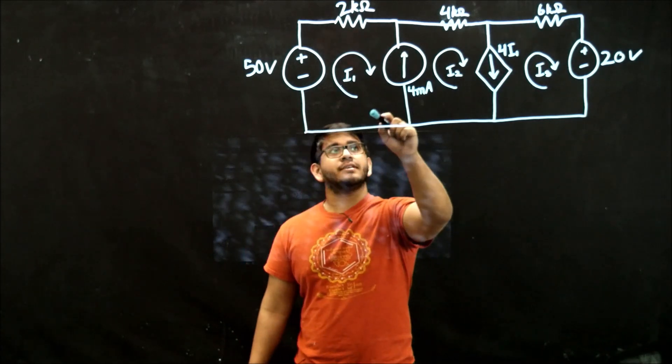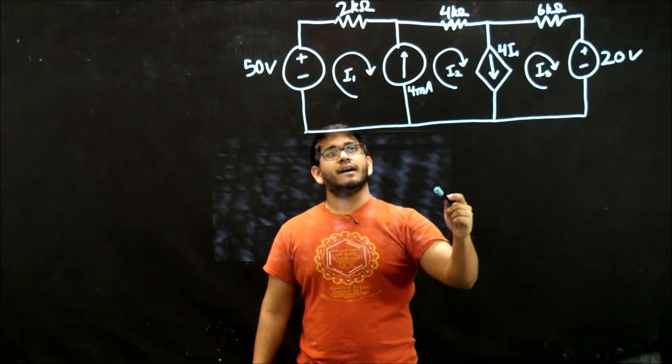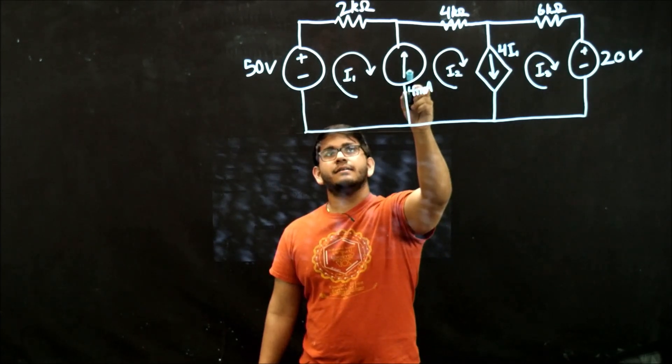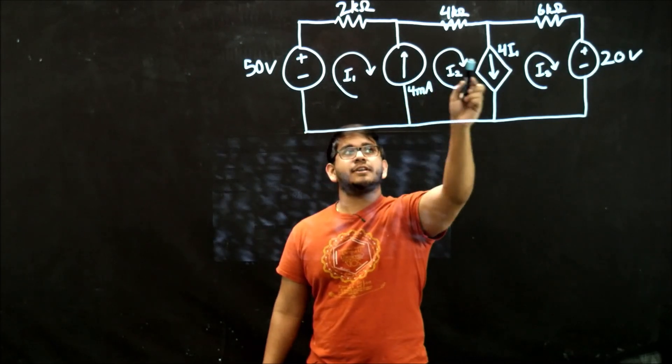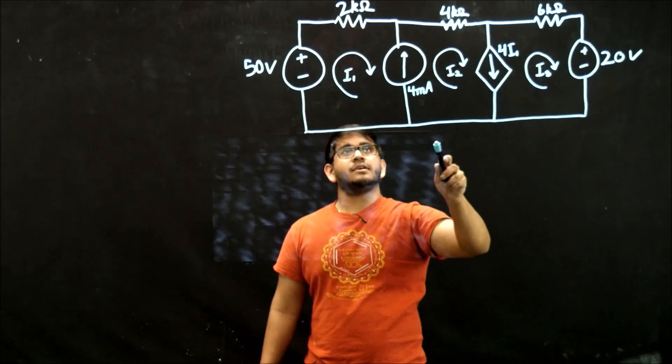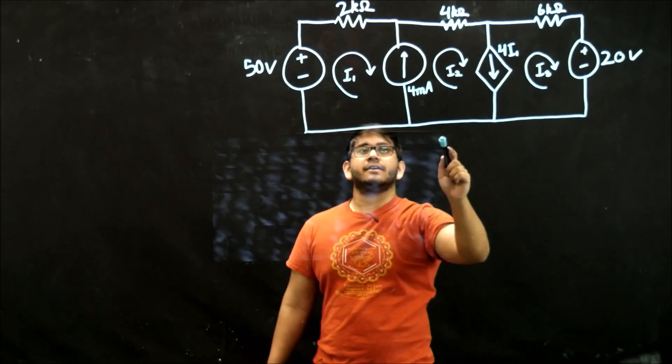In each of the currents in each of these meshes, we're going to have to use KVL. And since we have an independent current source between these two meshes and a dependent current source between these two meshes, we're going to have to write one big super mesh equation for the entire loop.